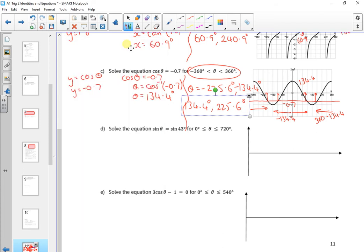So, let's look at the next one then. So the next one is, oh, sine 43 is just a number. So it's okay. It's just a value. So what have we got then? So sine theta is sine of 43.